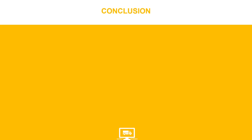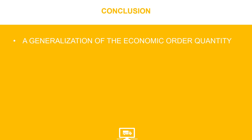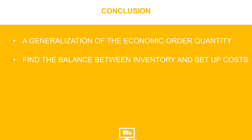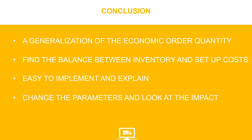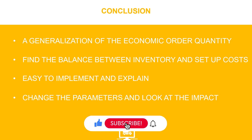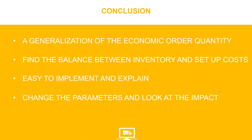To conclude, we have implemented this generalization of the Economic Order Quantity using Python. This solution is the best balance between limiting production setups and minimizing inventory. It can be implemented with few lines of code, and you can use a simple bar plot to explain the model. You can simulate several scenarios by increasing or reducing holding and setup costs to see how the model reacts to the changes. I hope this video gave you enough insight on how to implement the Wagner-Whitin model to solve the fixed horizon production planning problem. If you have any questions or issues implementing the code, feel free to share them in the comment section.